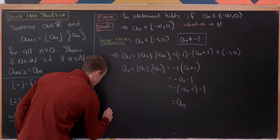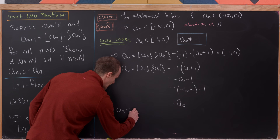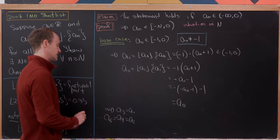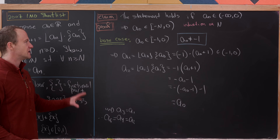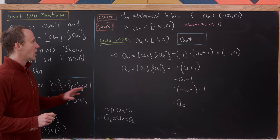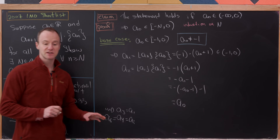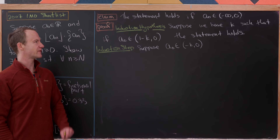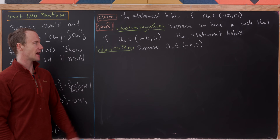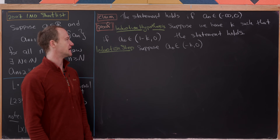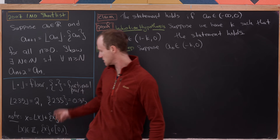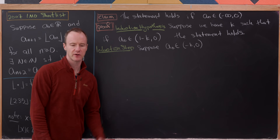From a₂ = a₀ it follows that a₃ = a₁, a₄ = a₂ = a₀, a₅ = a₁, and so on. So we have our two-periodic sequence immediately, completing the base case. Now let's move on to the induction step.